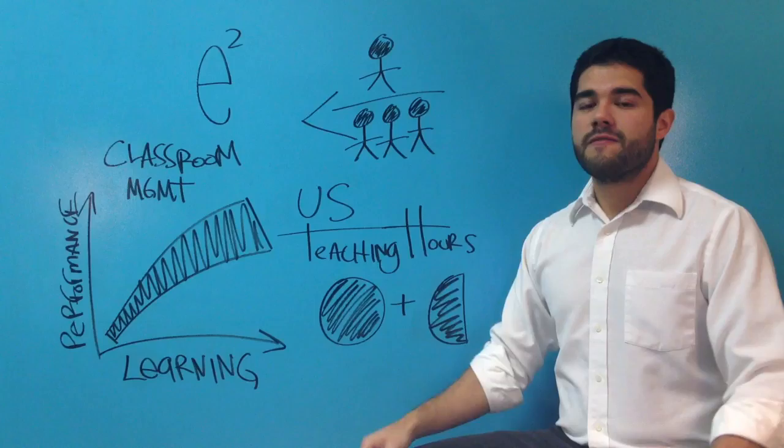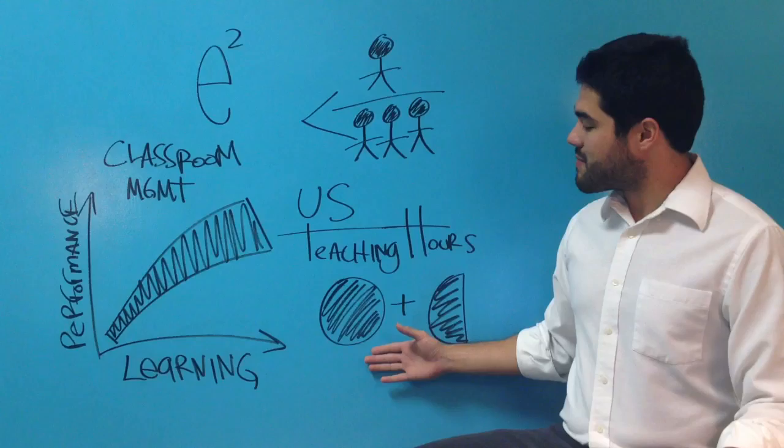Less than one-third of American students are proficient in reading and math. Fifteen other countries outperform our students in these subjects, yet our students spend 50% more time in class.